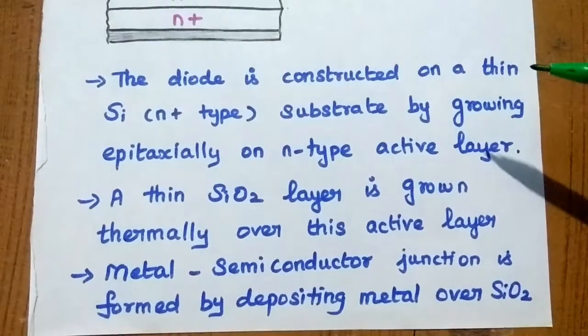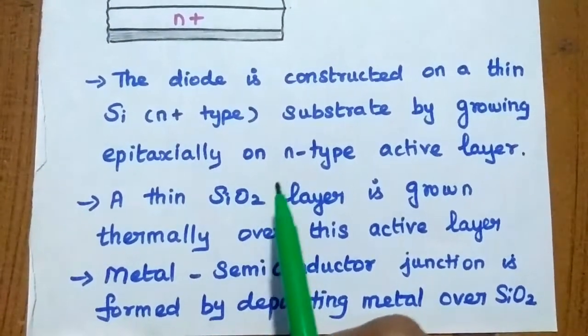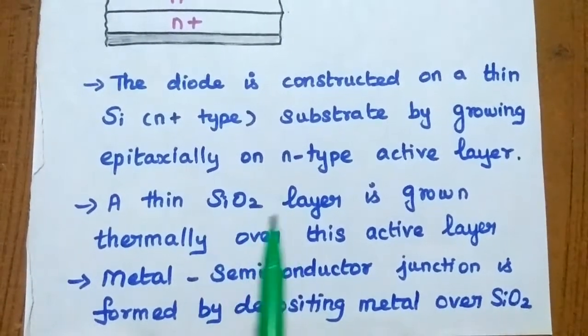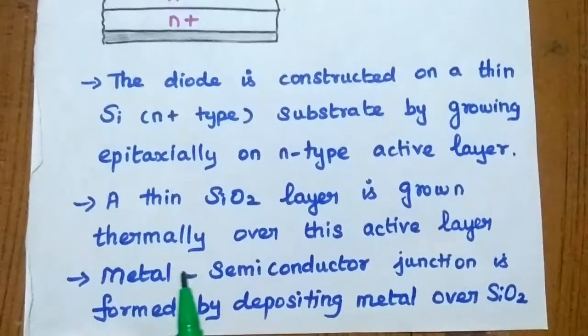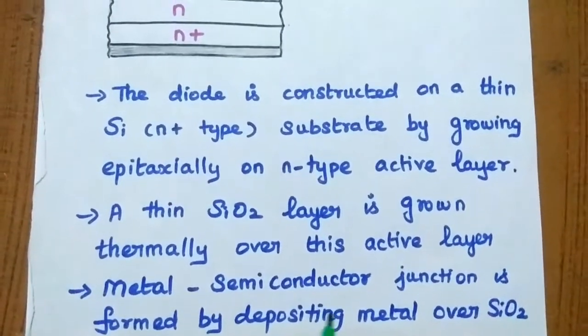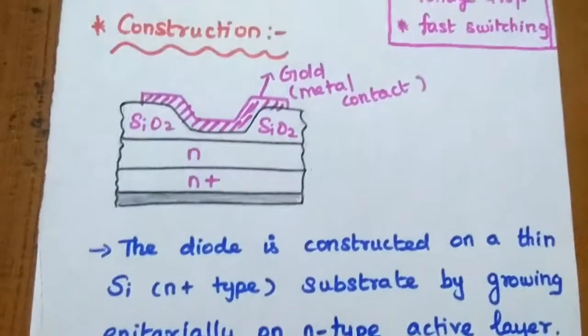The diode is constructed on a thin silicon substrate by growing epitaxially an N-type active layer. A thin silicon dioxide layer is grown thermally over this active layer. Metal-semiconductor junction is formed by depositing metal over silicon dioxide. Here the metal is gold.